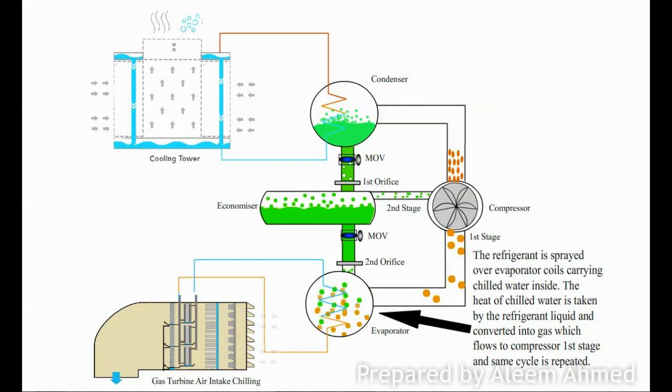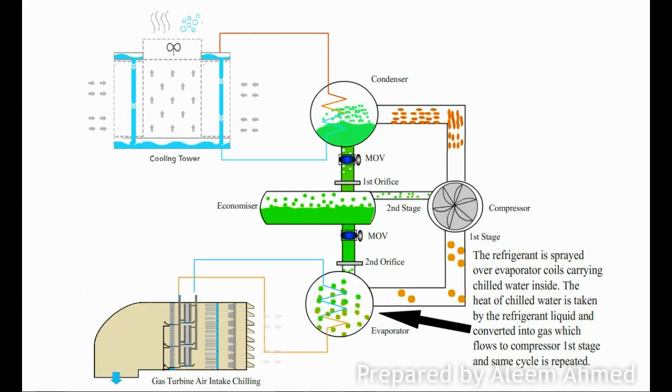The liquid refrigerant is sprayed over the evaporator coils carrying chilled water inside. The heat of the chilled water is taken by the refrigerant liquid and converted to gas.